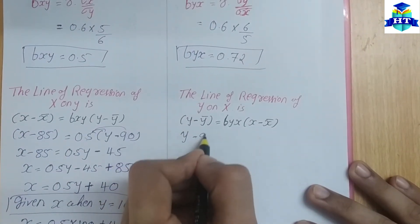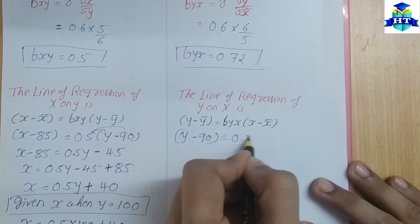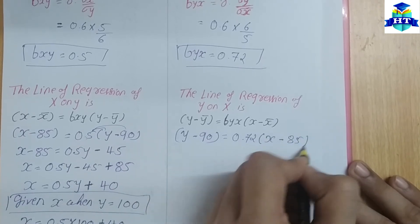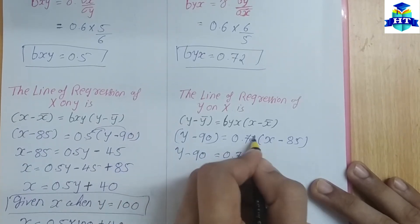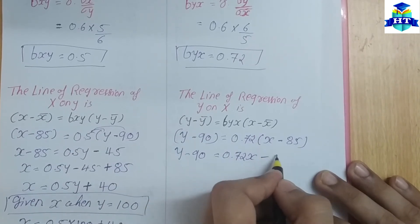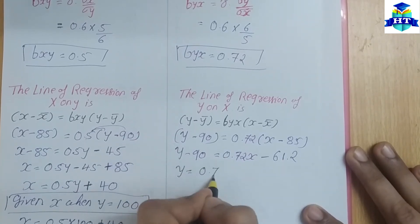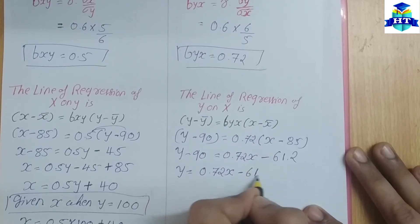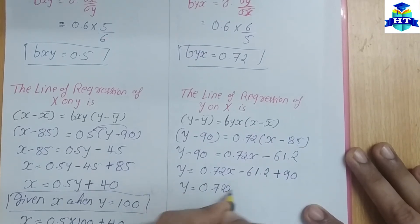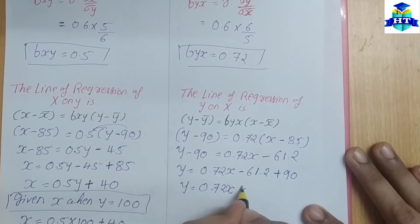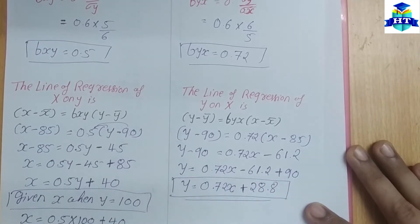For the regression line Y on X: Y minus Ȳ equals B Y on X multiplied by (X minus X̄). Ȳ is 90, B Y on X is 0.72, X̄ is 85. So Y minus 90 equals 0.72 times (X minus 85), giving Y equals 0.72X minus 61.2 plus 90, so Y equals 0.72X plus 28.8. You can verify this in the textbook — the answer is correct.